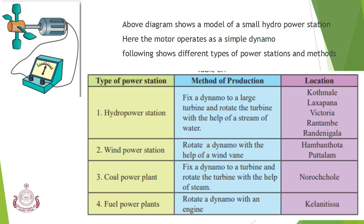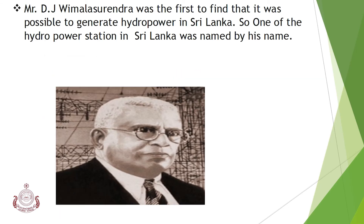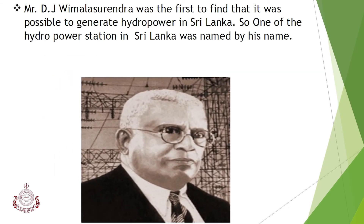A coal power plant fixes a dynamo to a turbine and rotates the turbine with the help of steam. Fuel power plants rotate a dynamo with an engine. This is a picture of a hydropower station. Mr. D.J. Wimalasurendra was the first to find that it was possible to generate hydropower in Sri Lanka, and one of the hydropower stations in Sri Lanka was named after him.